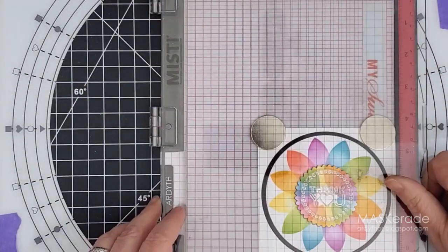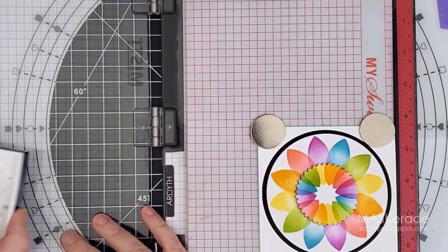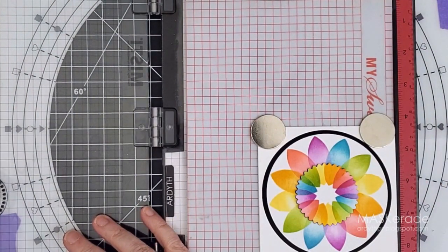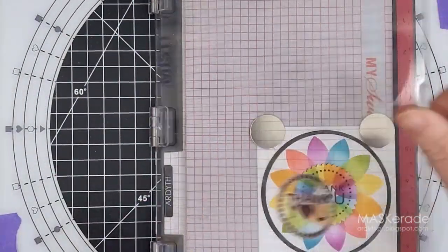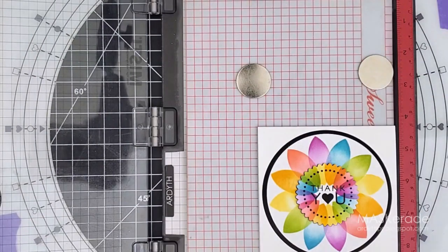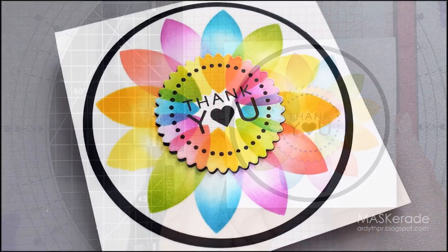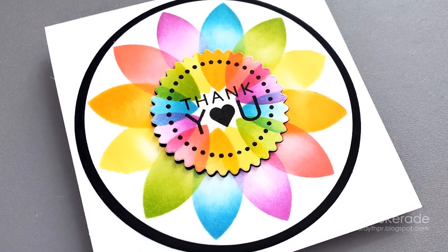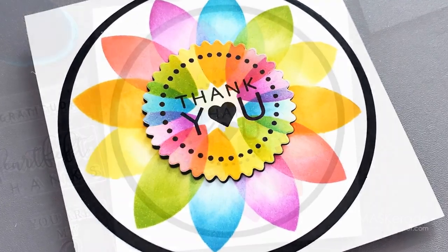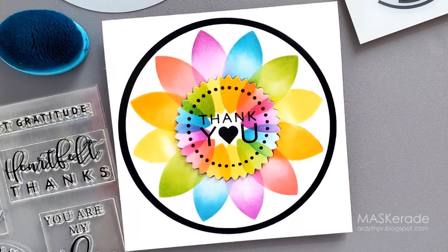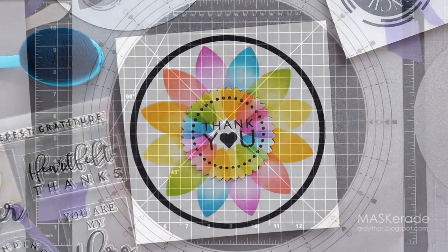Finally I stamped a sentiment from the Heartfelt Wishes set using my Misti. Really I should have done that before I put the center on the card, but I was so excited about that turning idea I couldn't wait. Fortunately even with all that foam tape I managed to get a good impression. This is my favorite kind of card, bold and vibrant with a rainbow of color, and I love the detail I created by turning that center. It took me just a minute to get them lined up so that each petal has complementary colors on it. It's such an easy way to add more interest and get people wondering how you did it.